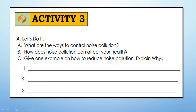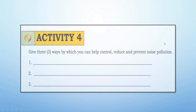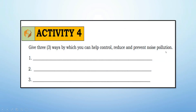For Activity 3, answer the following questions: (a) What are the ways to control noise pollution? (b) How can noise pollution affect your health? (c) Give one example of how to reduce noise pollution and explain why. For Activity 4: give three ways by which you can help control, reduce, and prevent noise pollution. That is all — thank you.